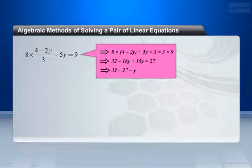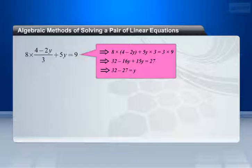Taking 3 as LCM on the left-hand side, we get 8 multiplied by (4 minus 2y) plus 5y multiplied by 3 equals 27. By cross multiplication we get 32 minus 16y plus 15y equals 27. This implies 32 minus 27 equals y, so y equals 5.